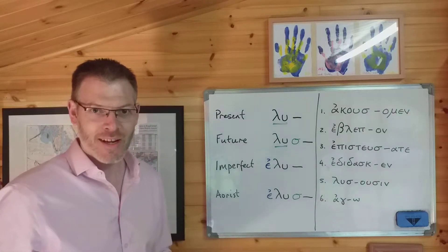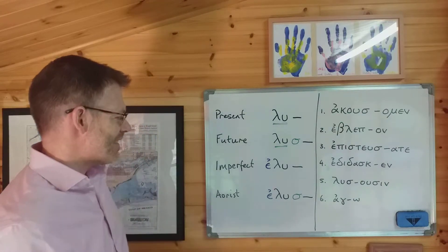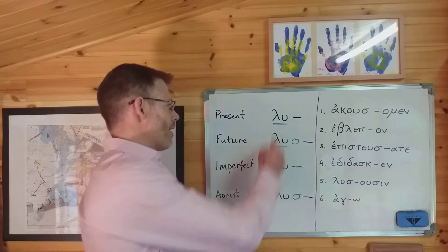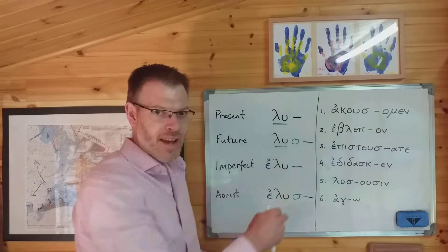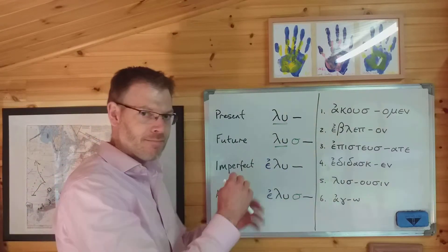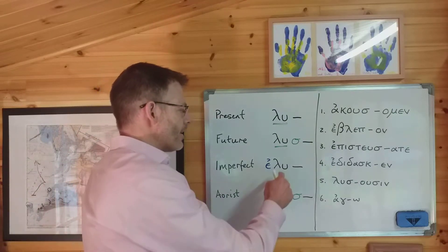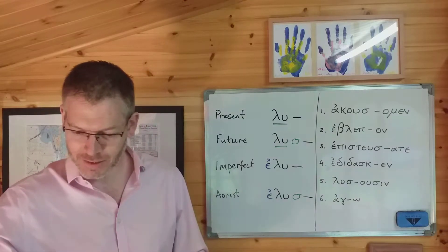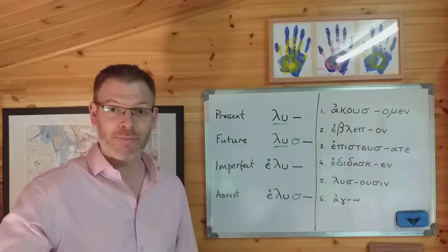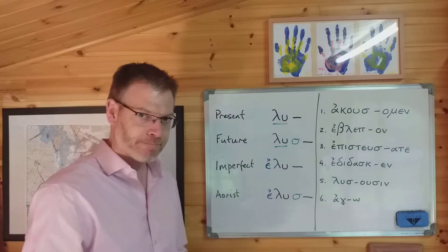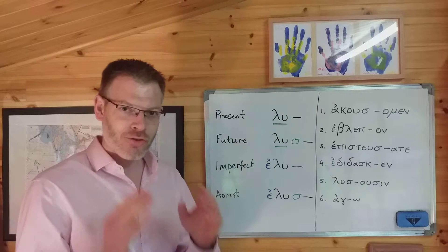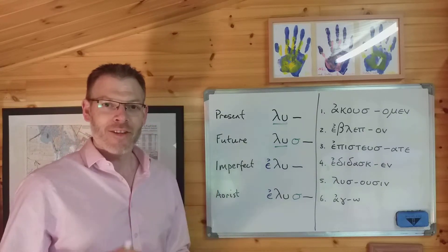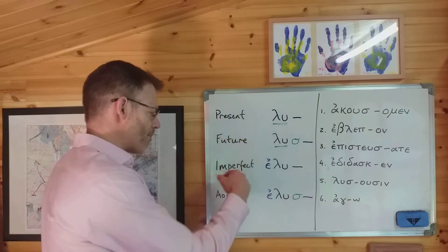So how do you tell the difference between them? Well, there are two ways you tell the difference. The first is that for the imperfect and the aorist, there are different endings from the present and the future. It turns out the present and the future endings are exactly the same, at least for these simple verbs. But the imperfect and aorist have different endings. So that's one way you can tell the difference.